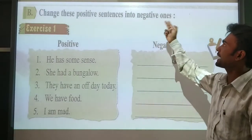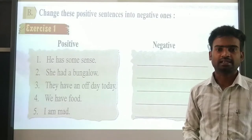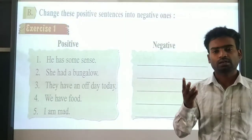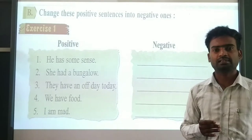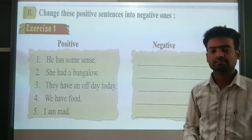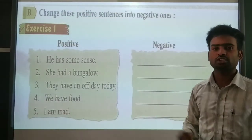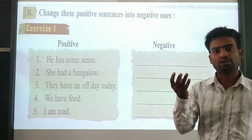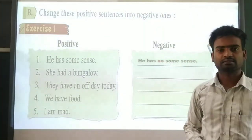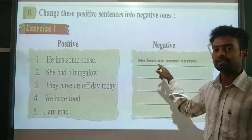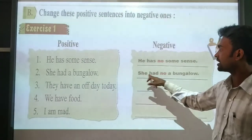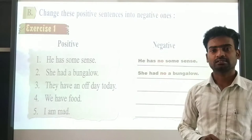Change these positive sentences into negative ones. As mentioned, we can use three words - 'no', 'not', and 'do not'. First: 'He has some sense' - we can use 'no' or 'not'. He has no sense - when we add 'no', it becomes a negative sentence. Next: 'She had a bungalow' becomes 'She had no bungalow.' Then: 'They have not an up-to-date rate' - we use 'not' to make it negative.